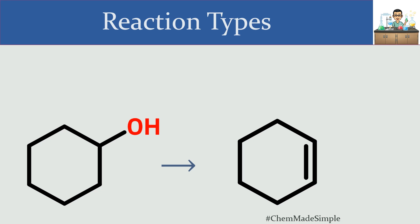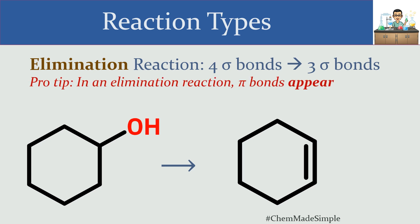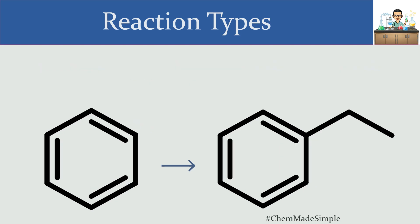In this next reaction, keeping track of pi bonds: I have no pi bonds on the original cyclohexanol, and now a pi bond has appeared. That's known as an elimination reaction. Students can spot elimination because pi bonds appear, but the reason it's called elimination is because we're getting rid of Sigma bonds. On each carbon that picks up the pi bond, we used to have four Sigma bonds, but in the product we have three.